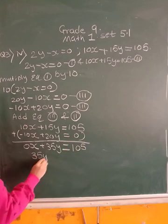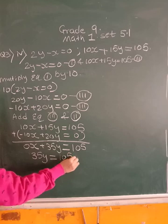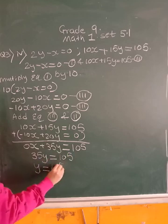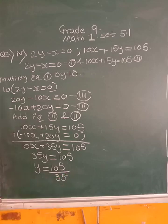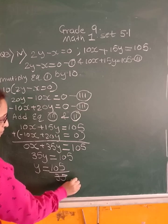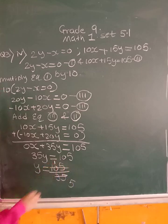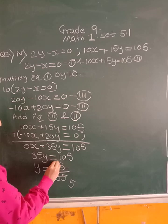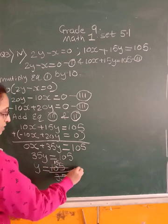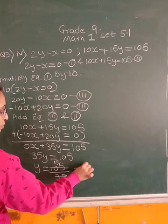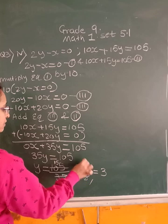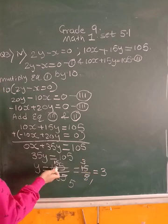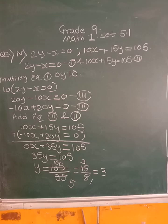So you have 35y = 105. So what will be y? Y is 105 upon 35. So 7 5s are, 7 ones are 7 and 7 5s are 35. So this is 15 upon 5 which will be equal to 3. Or directly also, 35 into 3 is 105. Got it everyone? So y value we got 3. You can pause the video and take it down.